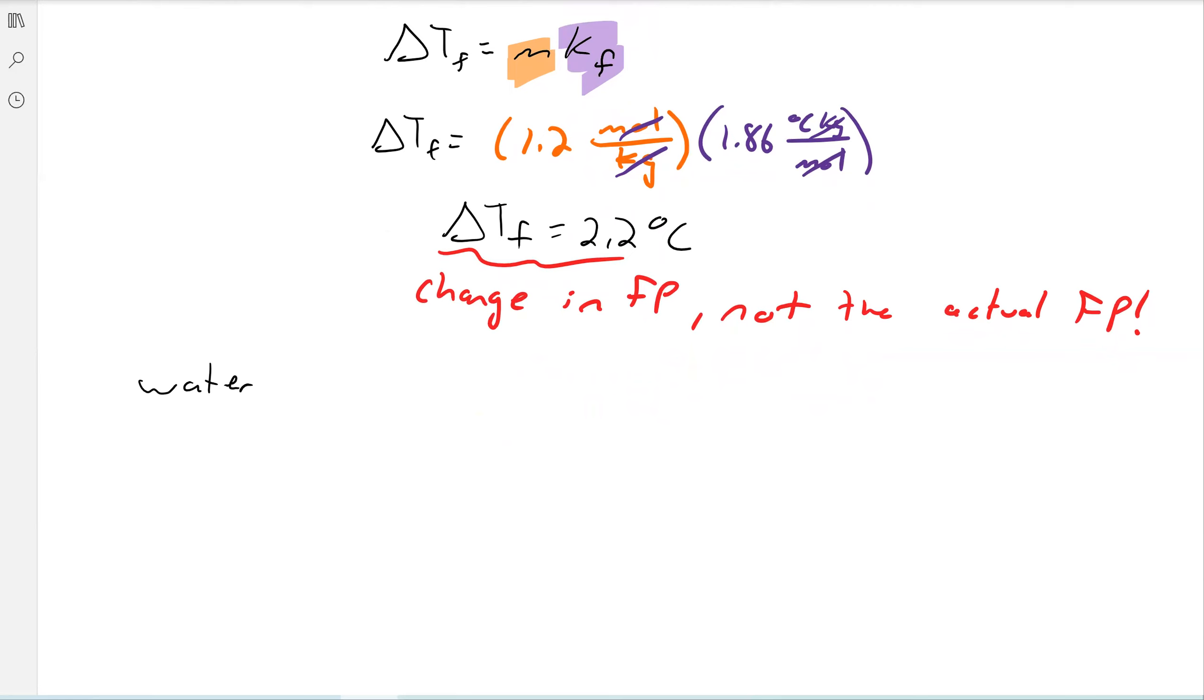Water, because we have a solution of water here, normally freezes at 0.0 degrees Celsius. And since we have a freezing point depression, right, solutes always depress the freezing point.